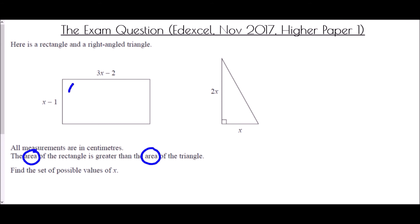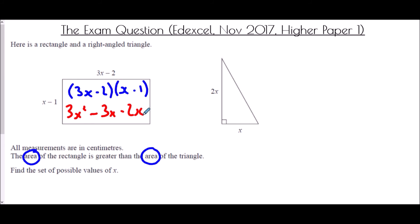The area of the rectangle is (3x take away 2) multiplied by (x take away 1). Expanding: 3x times x is 3x squared; 3x times negative 1 is negative 3x; negative 2 times x is negative 2x; and negative 2 times negative 1 is positive 2. So the area of the rectangle is 3x squared take away 5x plus 2.